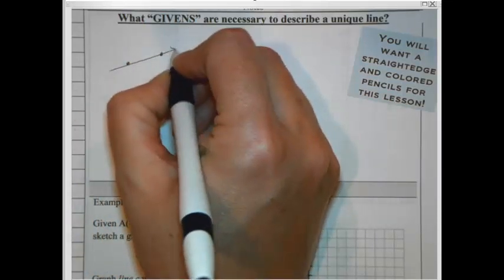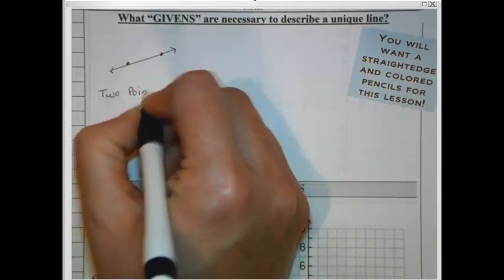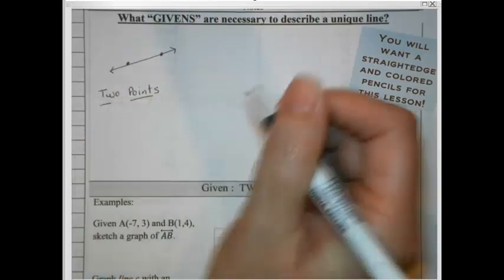So that's the first option for us. If we're given two points, then we could graph that line and it would be just one single answer. So two points would work.